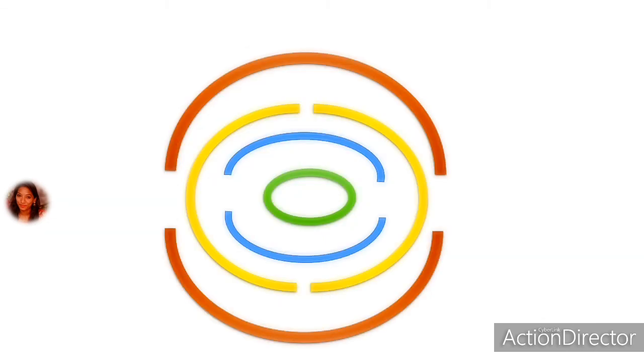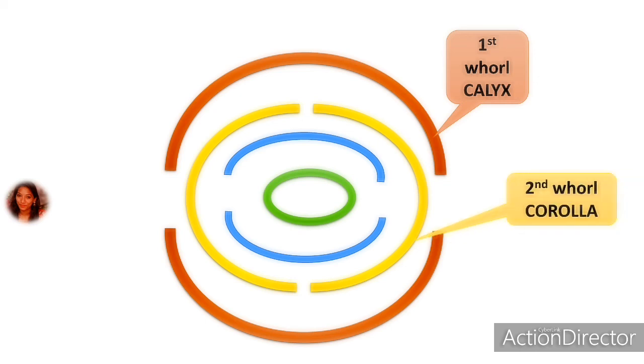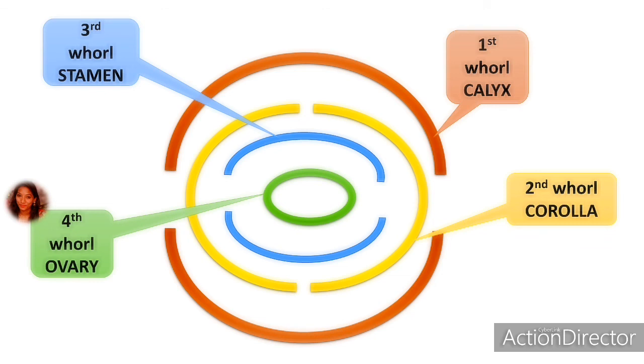According to this flower structure, there are majorly four circles known as whorls. As you can see over here, the outermost whorl is the calyx made up of sepals, inside which is the colorful corolla, the second whorl. More than that, the third whorl is the stamen, that is androecium portion, the male part, and the central portion is the fourth whorl consisting of ovary, that is the female portion. Combinedly, all these four whorls together make the whole circular structure of the flower.